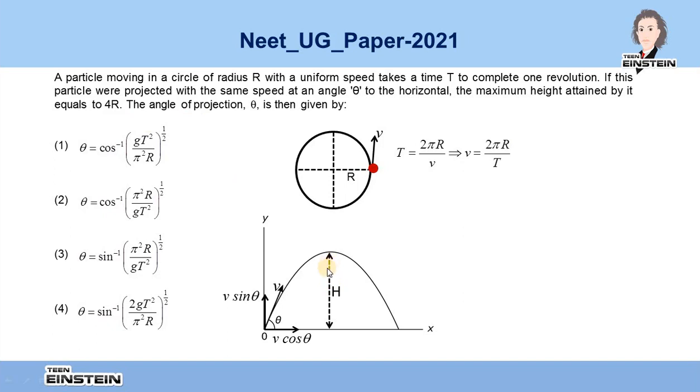We know that if the particle is being projected at an angle theta, it has two velocity components. One is v sin theta along the vertical direction, responsible for vertical motion, and v cos theta, responsible for horizontal motion of the particle.